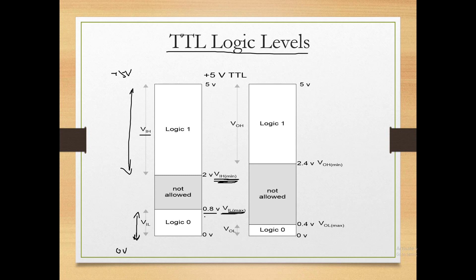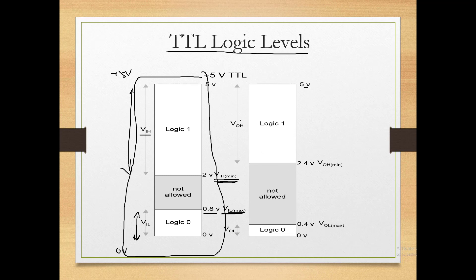Similarly, the output of any TTL logic gate can be logic 1 or logic 0. VOH is the output voltage range of logic high, with a range of 2.4 to 5 volts. For TTL specifically, the logic high output range is 2.4 to 5 volts — if the output voltage is between 2.4 and 5V, you consider it logic high. VOL (voltage output low) — for logic low the voltage is 0 to 0.4 volts. That means 0.4V is the maximum voltage for logic 0 output.